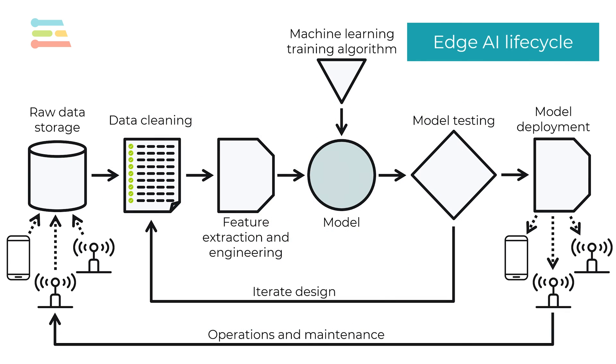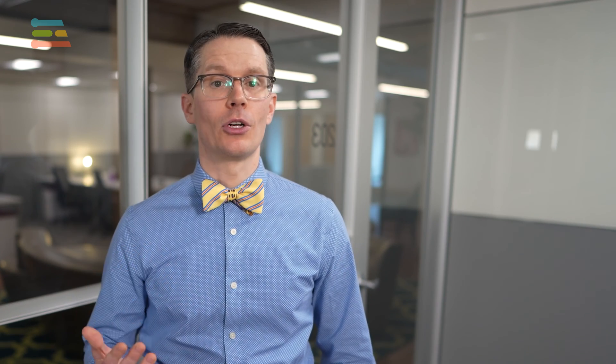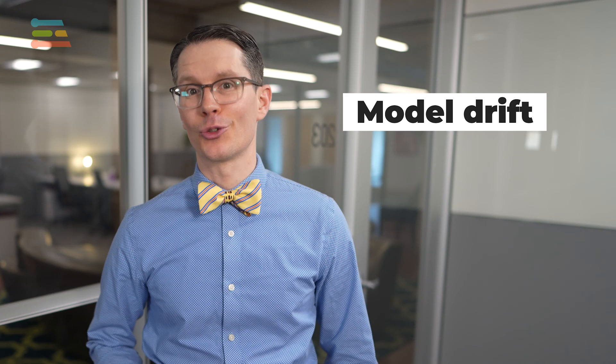Finally, we should look at automation for the O&M stage of our pipeline. This often involves monitoring various usage metrics as well as how well the model is performing in deployment. More often than not, you will experience something called model drift.